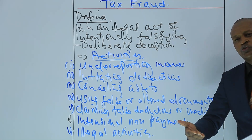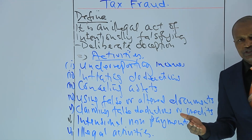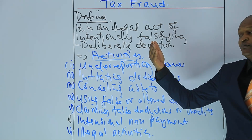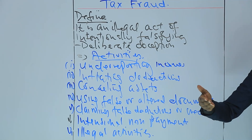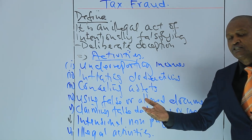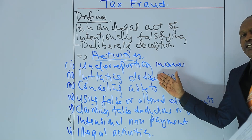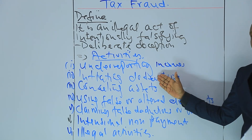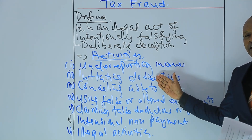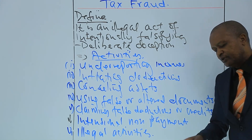Tax fraud contrasts with tax avoidance, which involves using legal methods to minimize tax liability, such as investing in tax-deferred repayment plans or claiming allowable deductions and credits. Tax fraud is criminal and intentional, whereas tax avoidance is legal and within the bounds of the law.